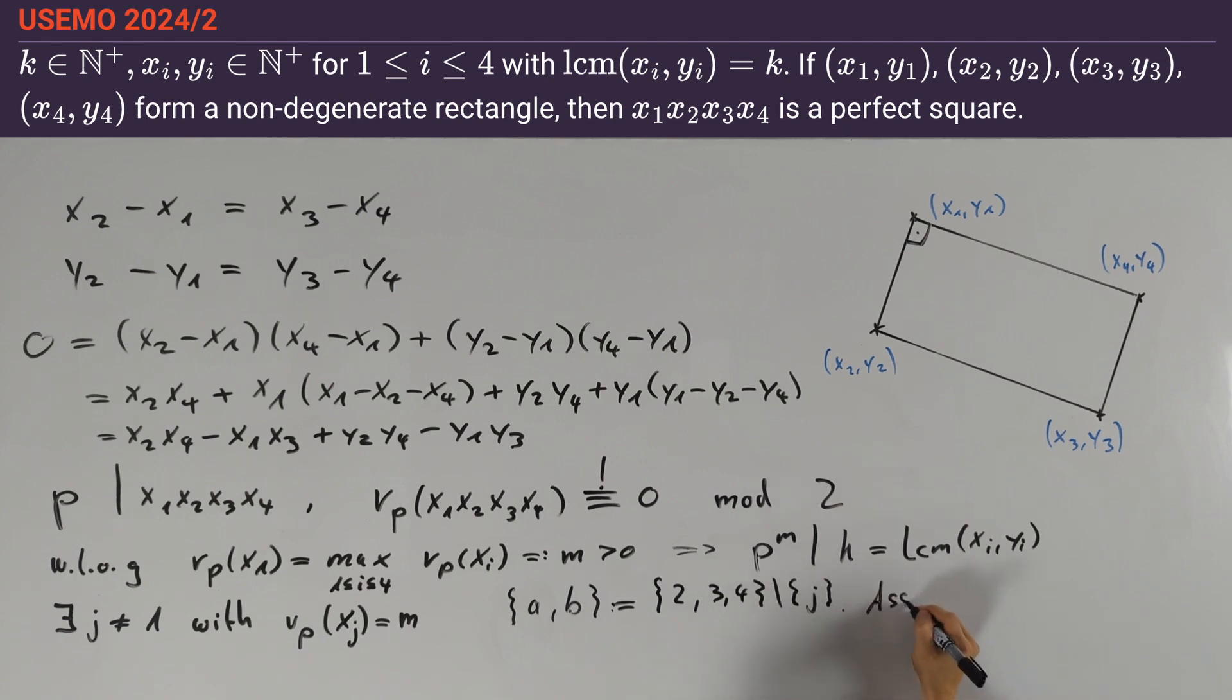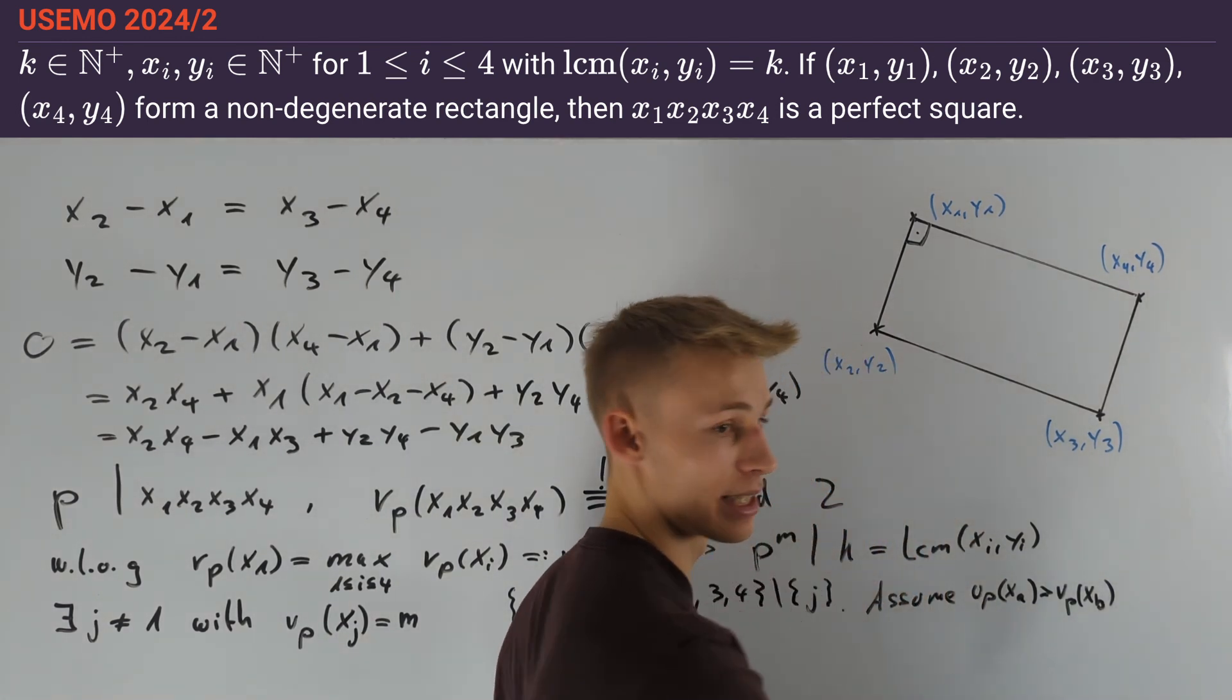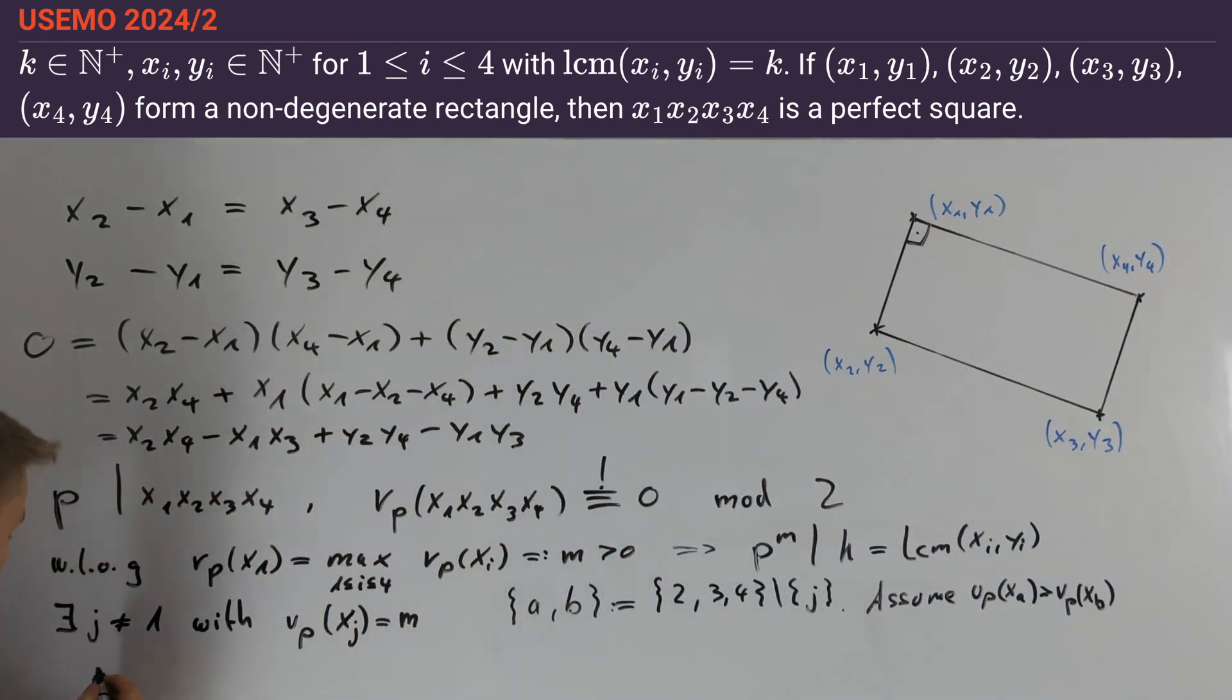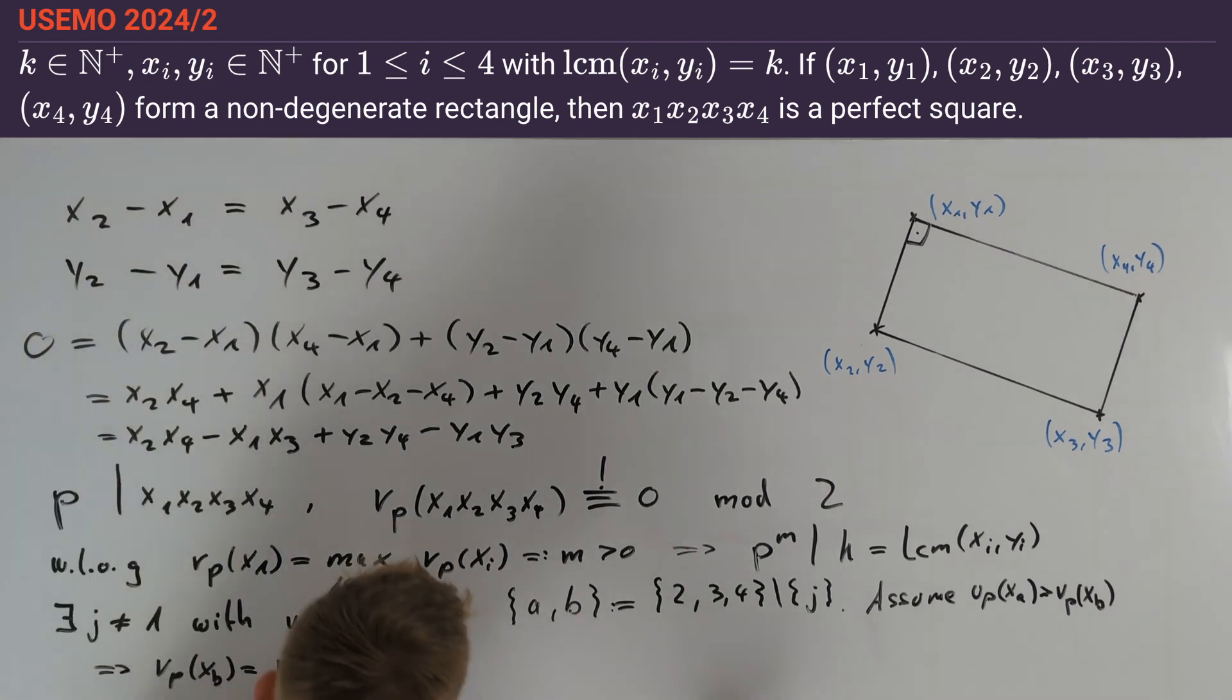So assume nu_p(xa) > nu_p(xb). In particular nu_p(xb) < m, and therefore we can conclude that nu_p(xb) = nu_p(x1 ± xb). Using our first equation we can rewrite x1 ± xb as ±xj ± xa.